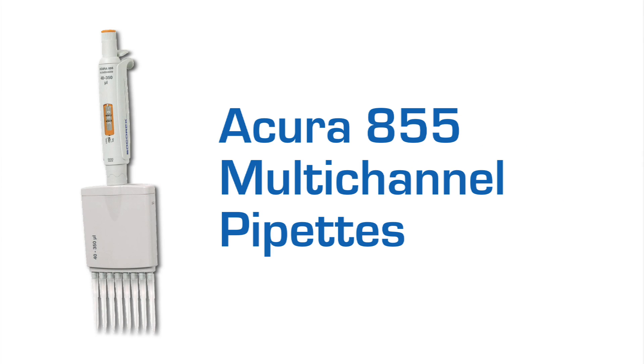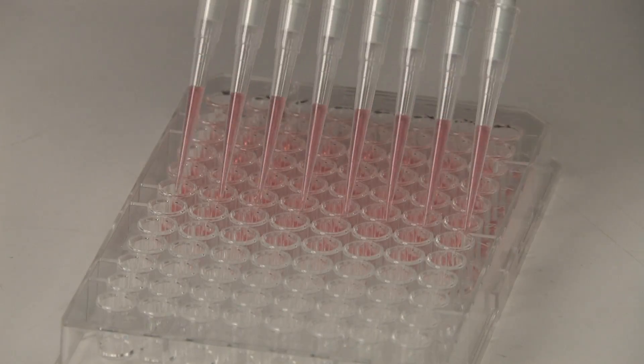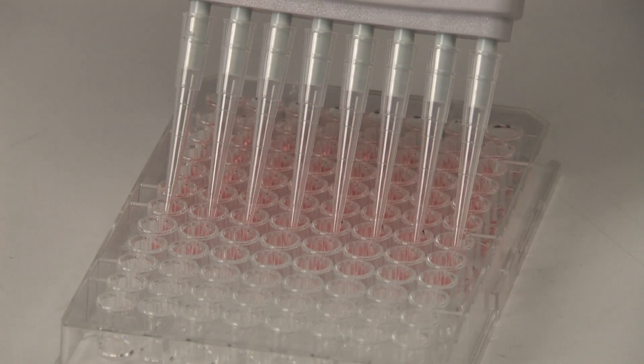The Acura Manual 855 multi-channel models come in both 8 and 12-channel models to enable high-throughput pipetting with microplates.